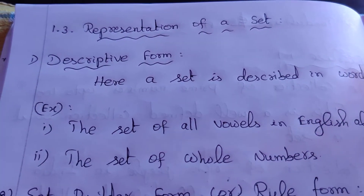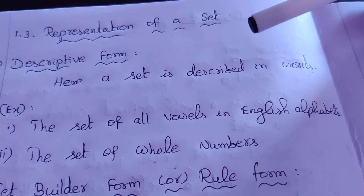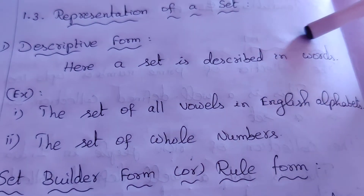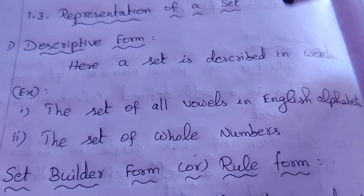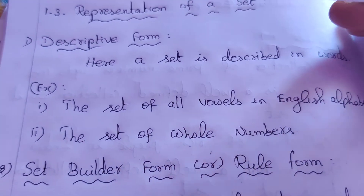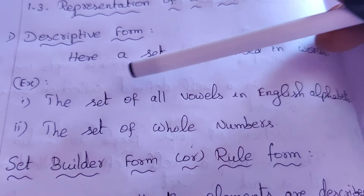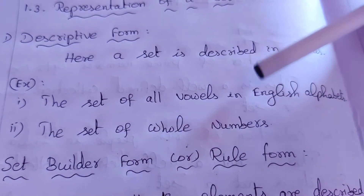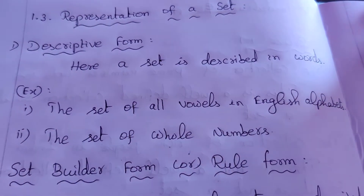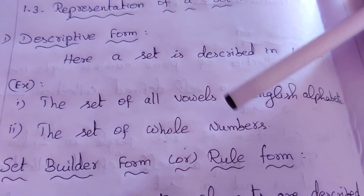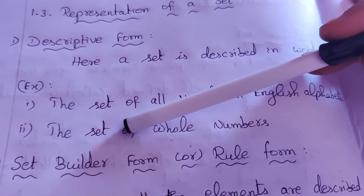The first is the Descriptive form. Here, a set is described in words. It is very easy to use. For example, the set of all vowels in English alphabets, or the set of all whole numbers.